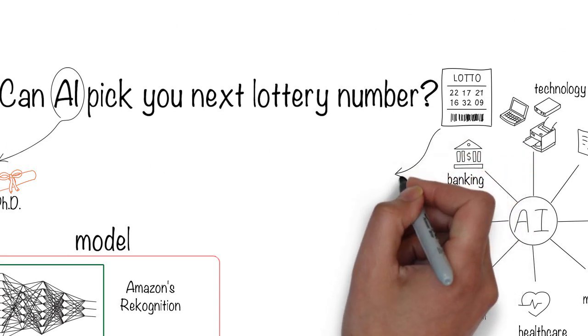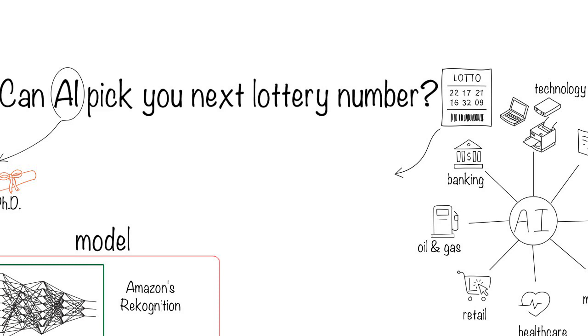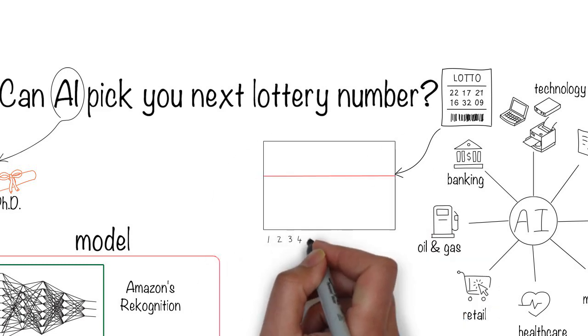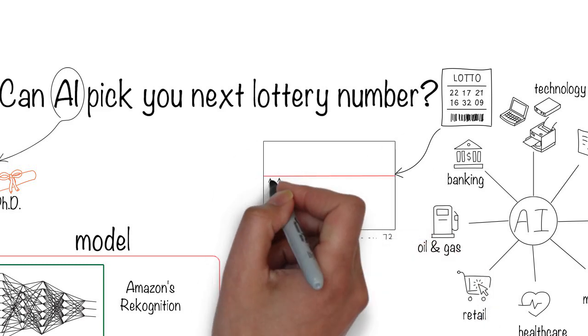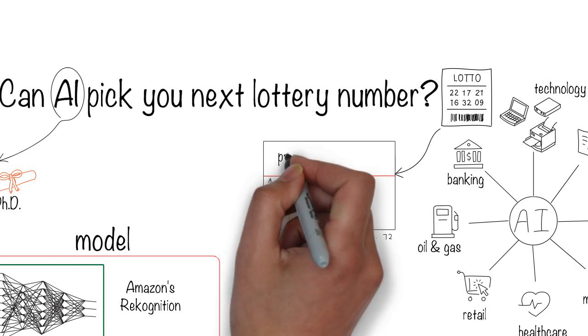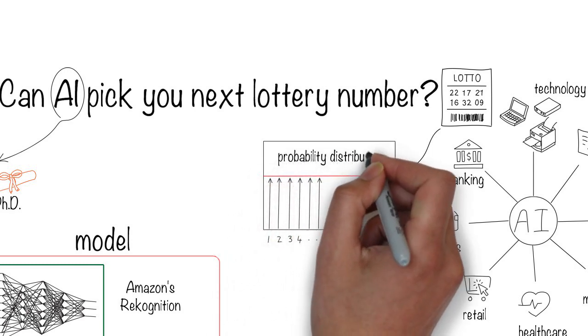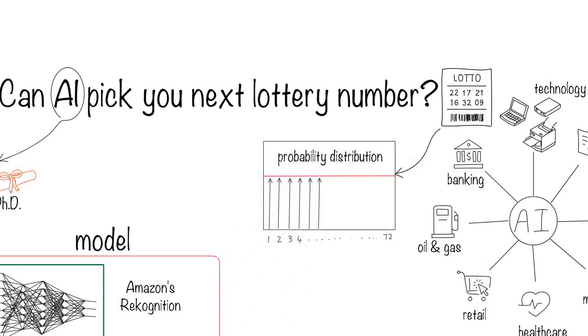Back to the lottery example. Unless you're building an AI system for a Nigerian prince, it's a futile exercise. We have lots of historical data for the lottery, but the probability of each number occurring in the lottery is the same. There is no pattern in the data.